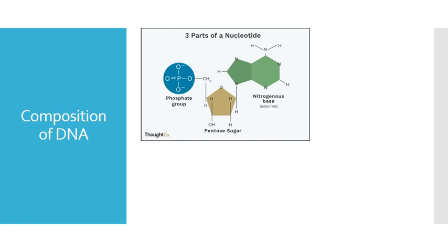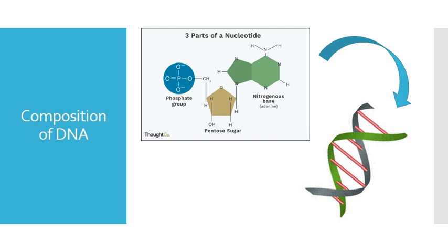After Avery, MacLeod, and McCarty, many scientists worked on experiments that established the basic composition of DNA. We know that DNA is made up of a sugar (deoxyribose), a phosphate group, and a combination of four nitrogen bases: adenine, guanine, thymine, and cytosine. These building blocks join together to form the double helix DNA strand that we know today. But how did we get from basic building blocks to a complex, twisty gene noodle?